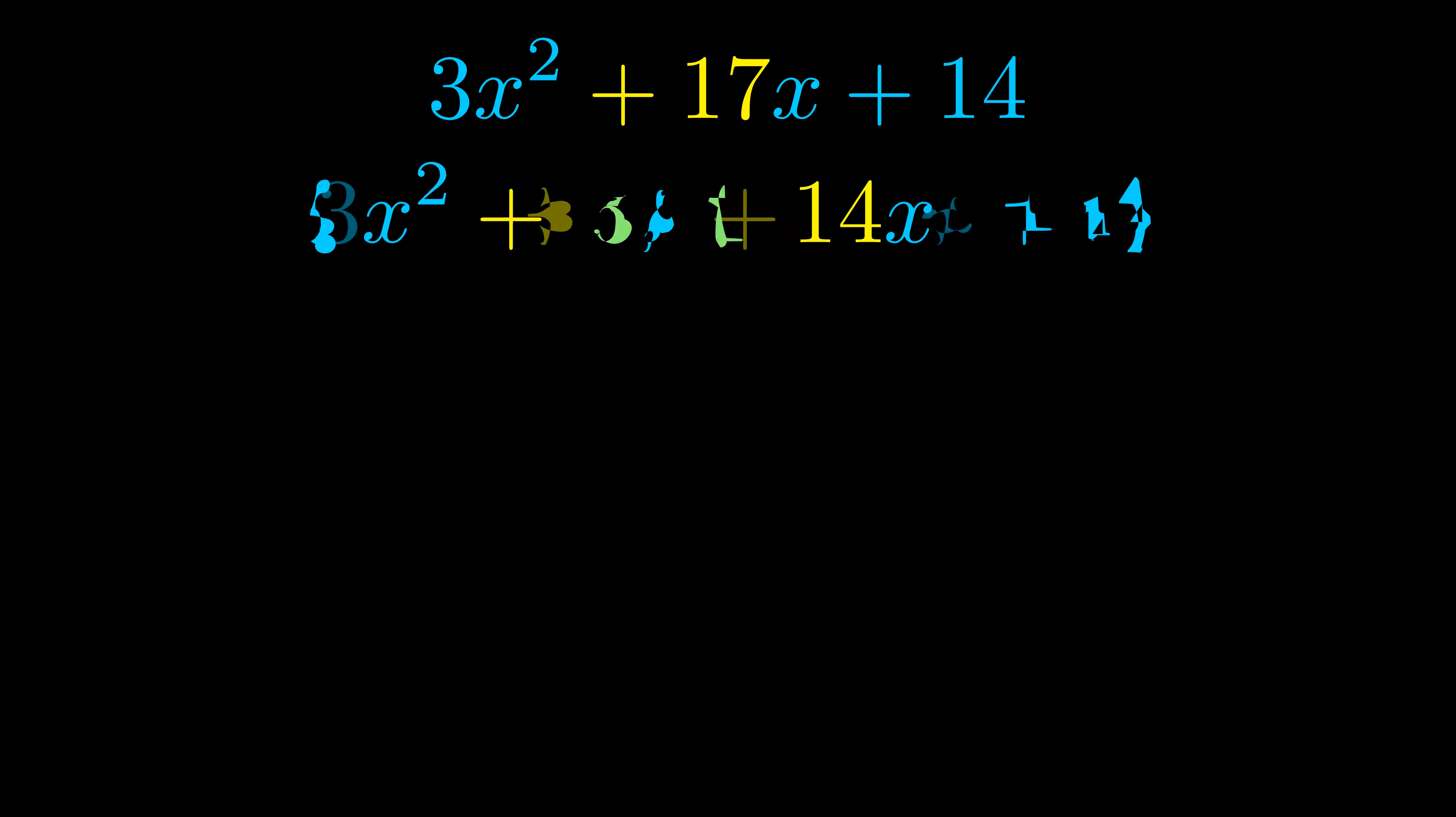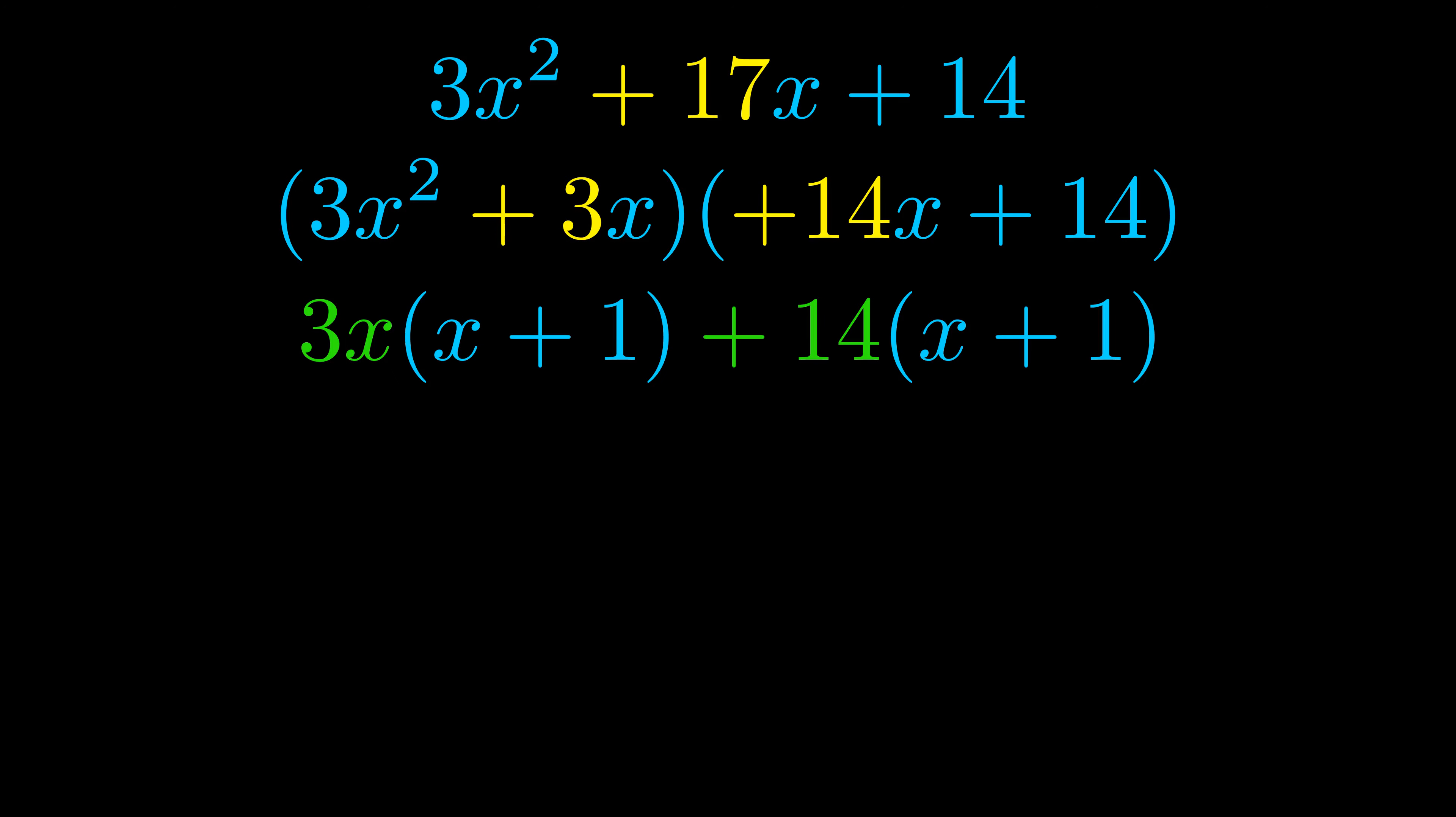Once we've done this we go ahead and we put parentheses around the first term and the last term, and we do that so that we can take the greatest common factor out of both terms. We can see the greatest common factor is now outside in green.